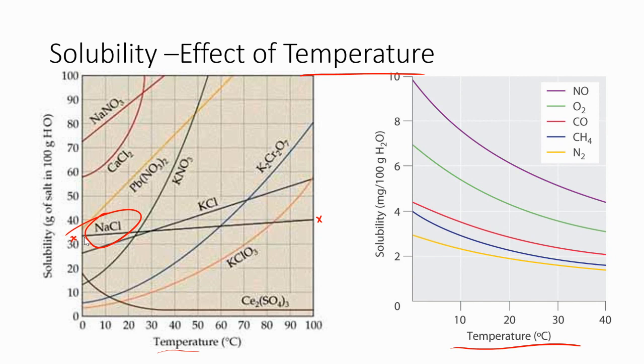But if you take a look at something like KNO3, KNO3 starts off as not very soluble at all at low temperatures, and its solubility goes through the roof at high temperatures. So there's a huge effect on the solubility of that particular solid.